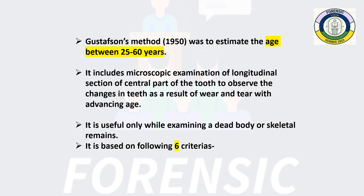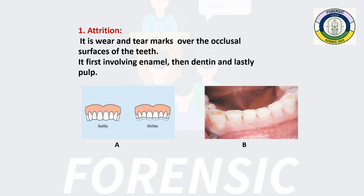Six criteria were used. The first is Attrition — wear and tear marks over the occlusal surfaces of the teeth due to mastication. In this image we can compare the length of normal healthy teeth with a real image of teeth showing attrition.